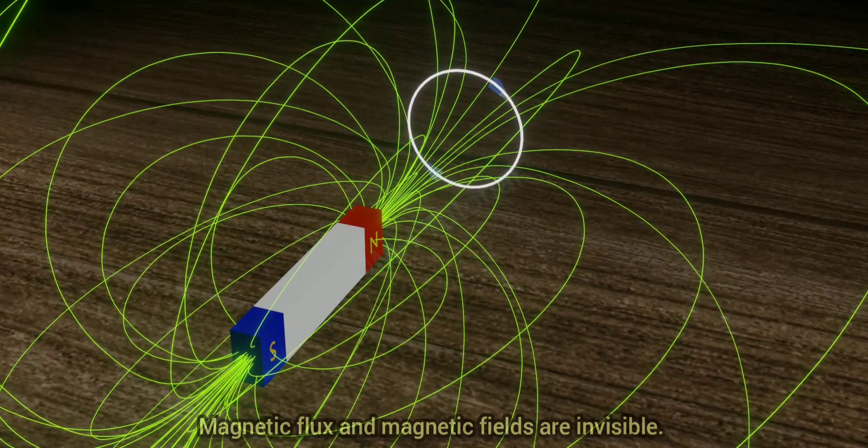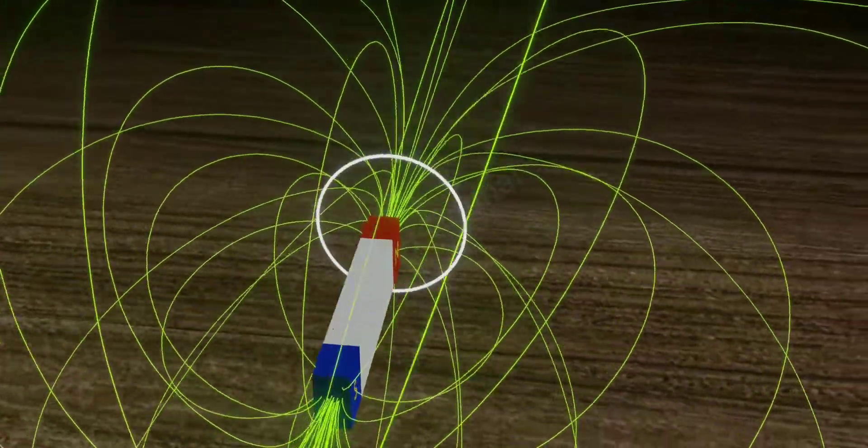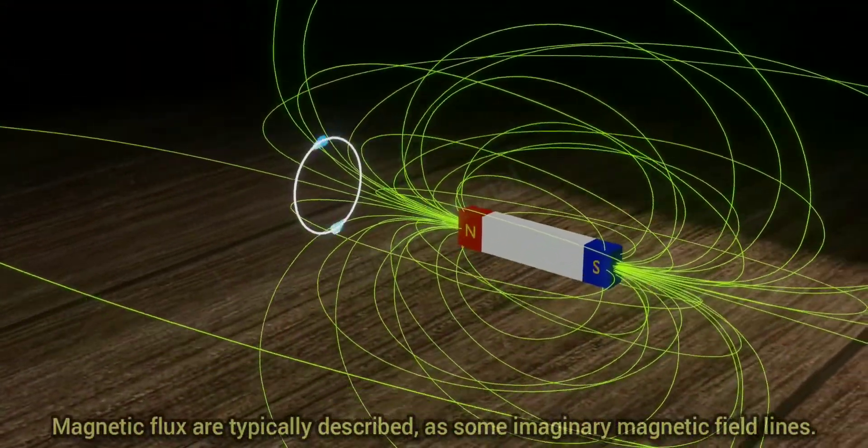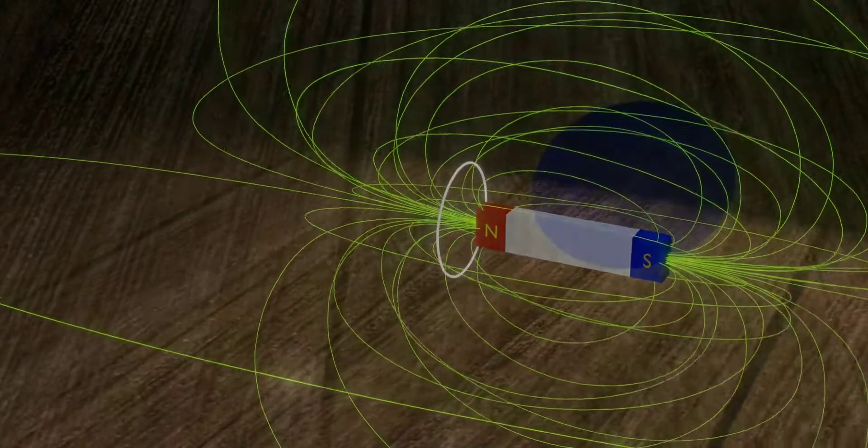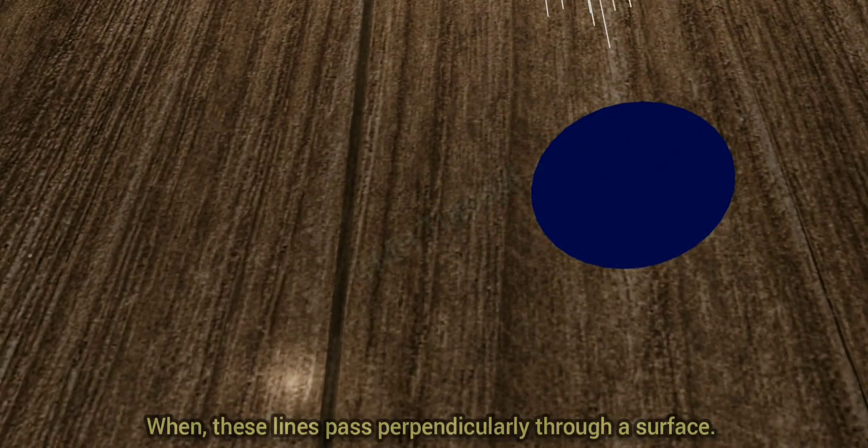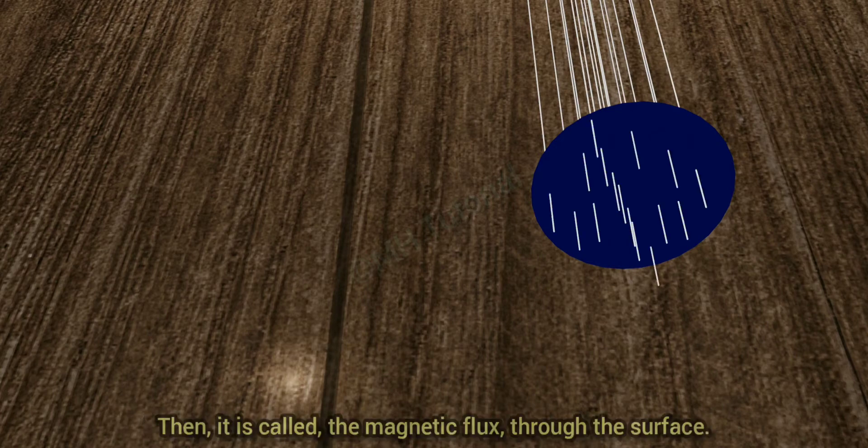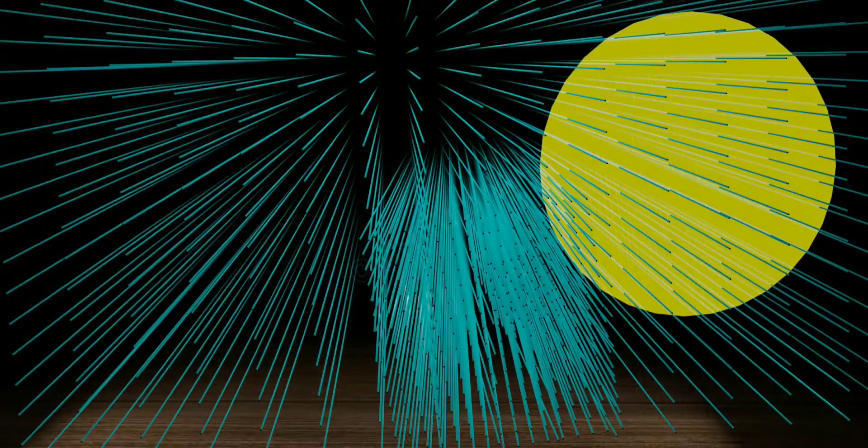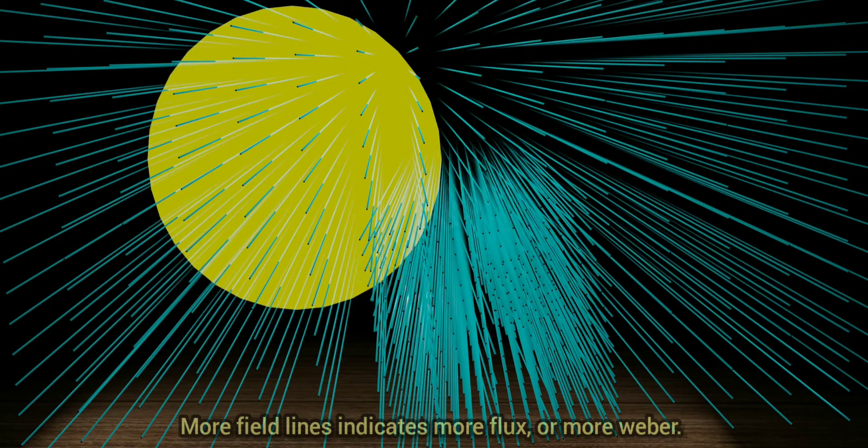Magnetic flux and magnetic fields are invisible. Magnetic flux are typically described as some imaginary magnetic field lines. When these lines pass perpendicularly through a surface, it is called the magnetic flux through the surface. More field lines indicates more flux or more Weber.